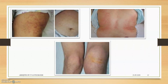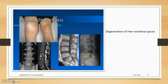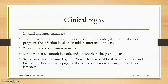Signs in human brucellosis include petechial and erythematous lesions, joint swelling, and degeneration of intervertebral spaces. In small and large ruminants, after bacteremia the infection localizes in the placenta, leading to abortion in the late trimester. If the animal is not pregnant, it can produce interstitial mastitis with high bacterial load in milk and very high somatic cell count. Orchitis and epididymitis occur in males. In cattle, abortion occurs at month 6–8, and in sheep and goats at month 4.